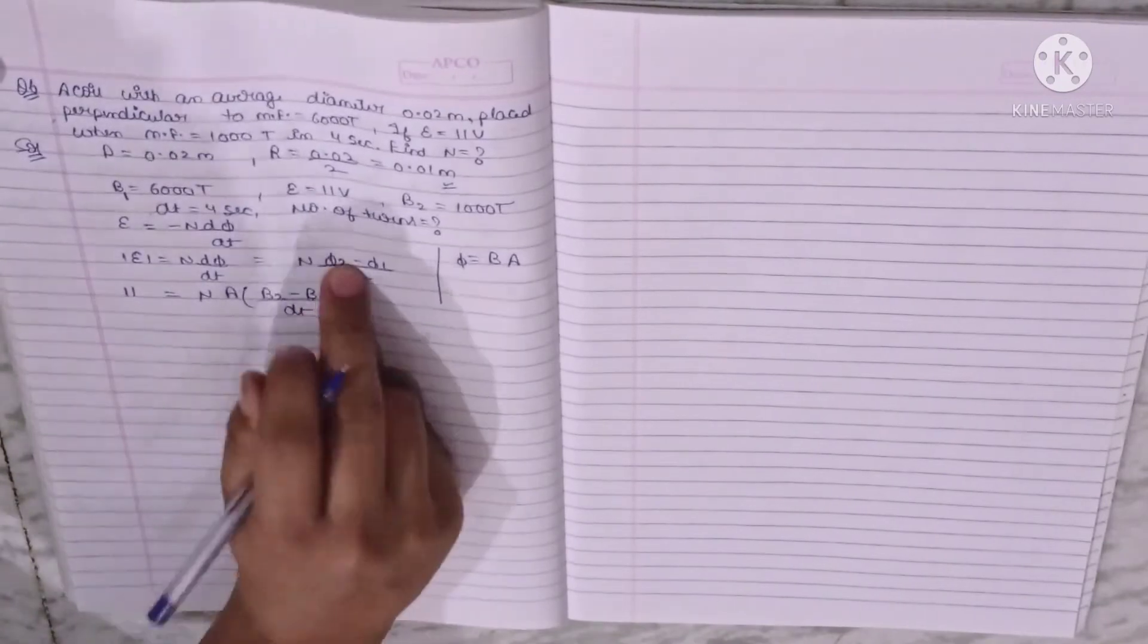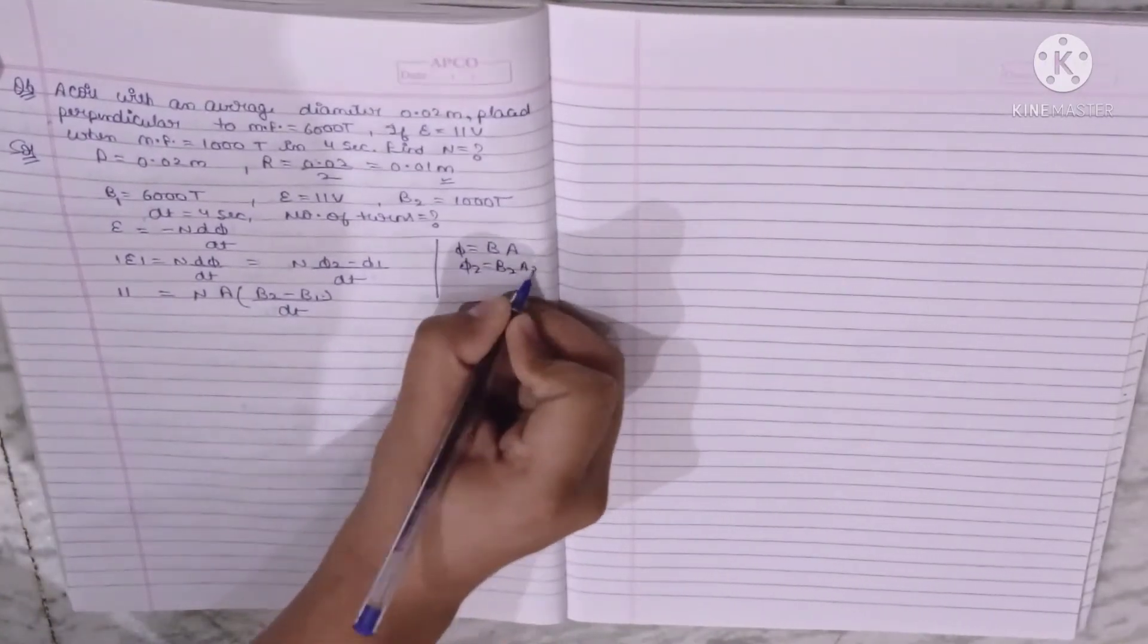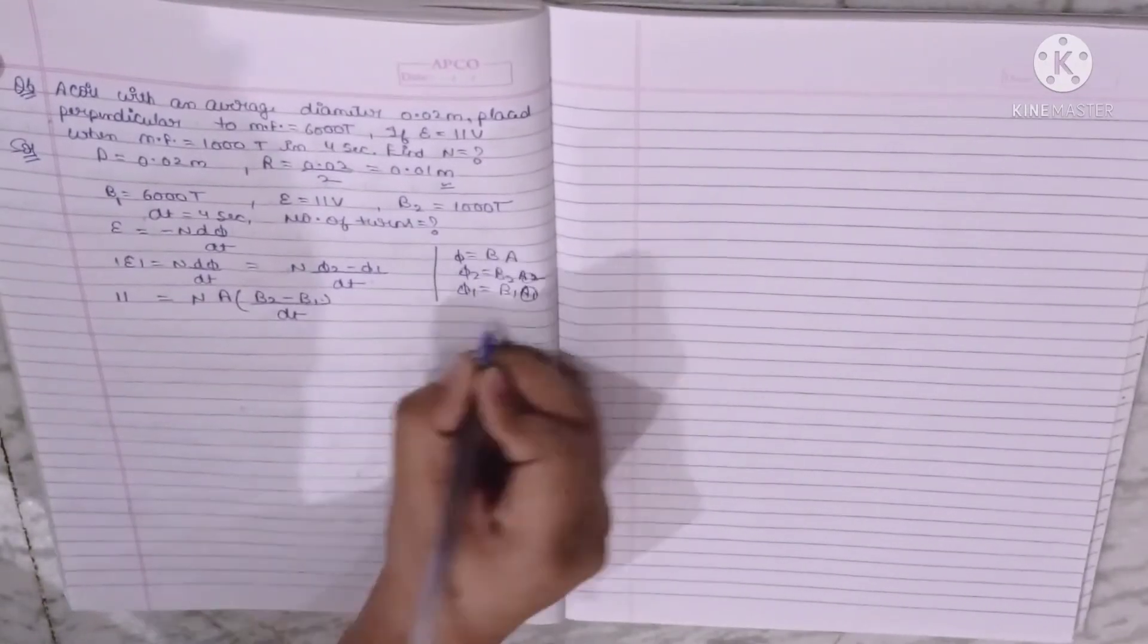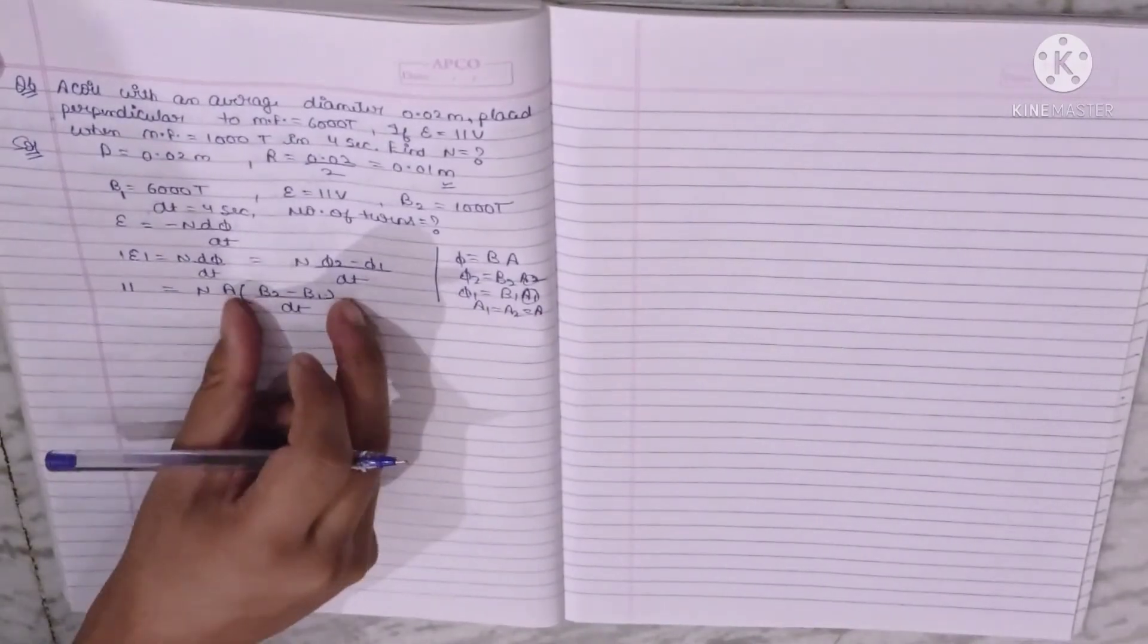How did B2 minus B1 come from here? I put where phi 2, I put B2 A2, and where phi 1, I put B1 A1. Here A2 and A1, the area is the same. A1 equal to A2 equal to A. A is common and B2 minus B1 is in bracket.